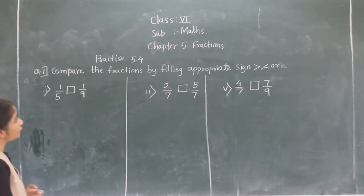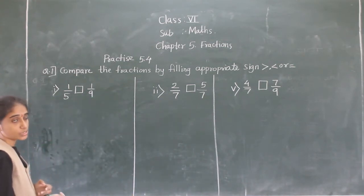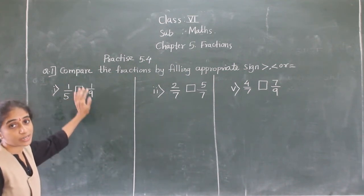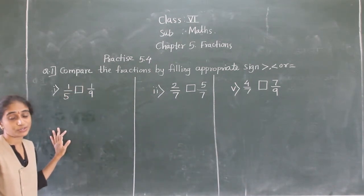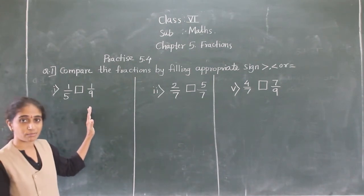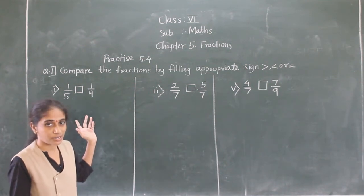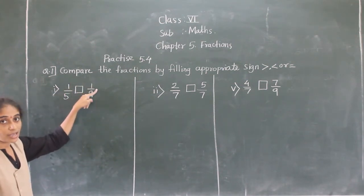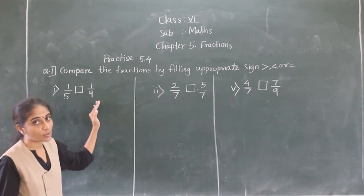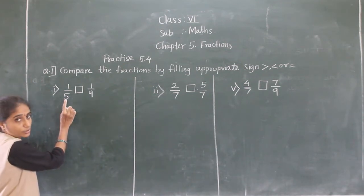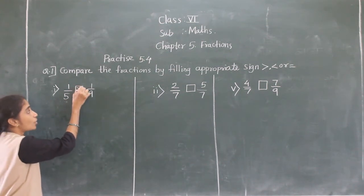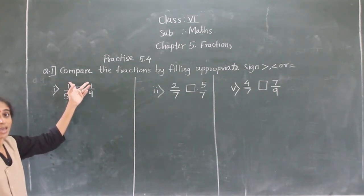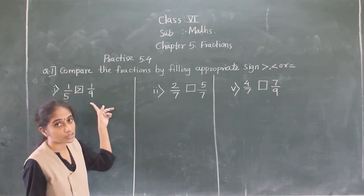Let's solve Practice Question: compare the fractions using the appropriate sign — less than, greater than, or equal to. First example: 1 upon 5 and 1 upon 9. The numerators are the same. When numerators are the same, the smaller denominator gives the greater number and the greater denominator gives the smaller number. So 1 upon 5 is greater than 1 upon 9 because 5 is the smaller denominator.